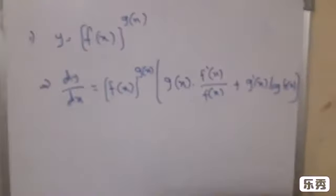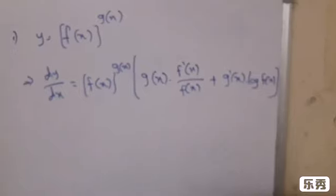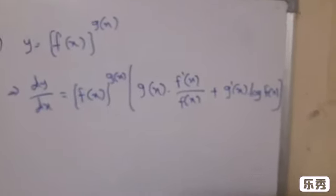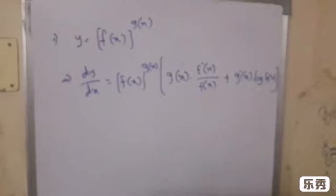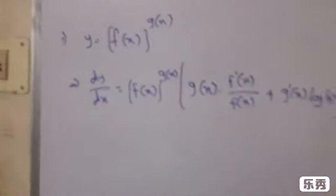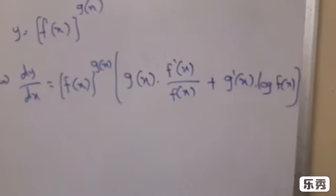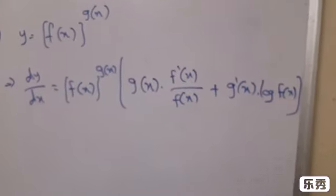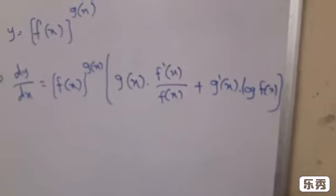This is a very useful shortcut formula for lengthy sums. Once again, if y equals [f(x)]^[g(x)], then dy/dx equals [f(x)]^[g(x)] into [g(x) × f'(x)/f(x) plus g'(x) × log f(x)].